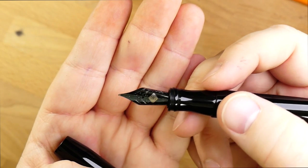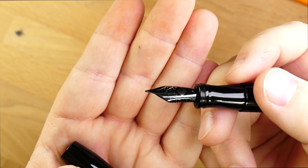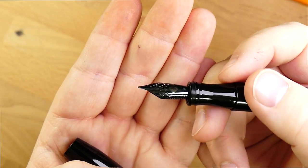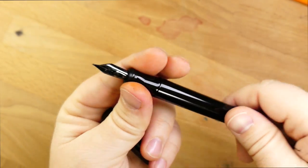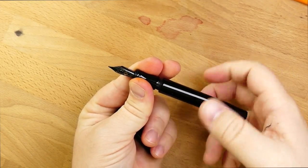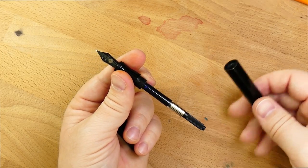This right here is a SIG nib. We'll do a little writing sample later. Although, I mean, you can get whatever nib you want on this guy. It's one of the huge bonuses. Obviously, this is going to be big enough to hold a converter. There you go. No problem there.